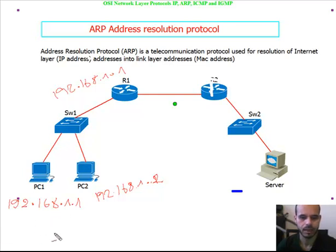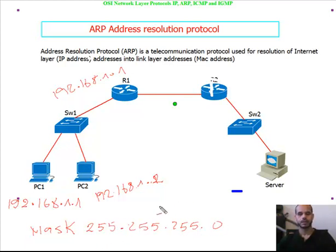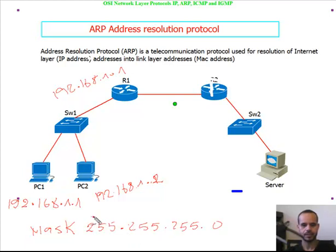Along with the subnet mask, hosts can distinguish whether they are located on the same subnet or not. Let's use the mask of 255.255.255.0. All the bits that are turned on — meaning 255 in each octet — represent the network ID. The remaining 8 bits on the left represent the host portion.